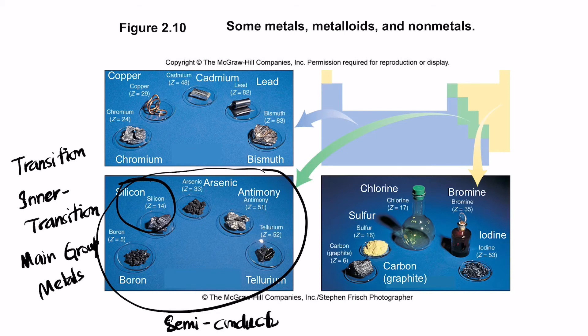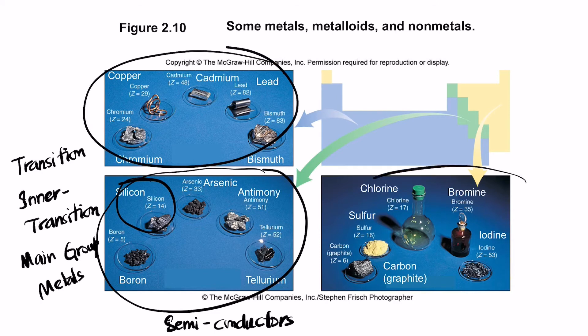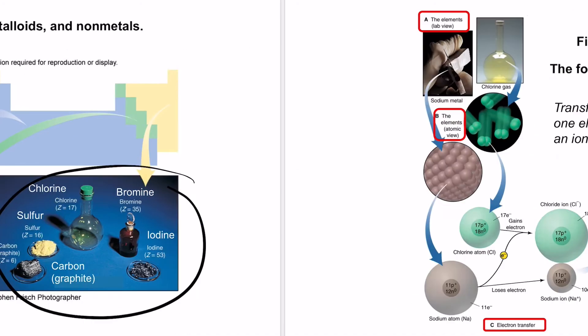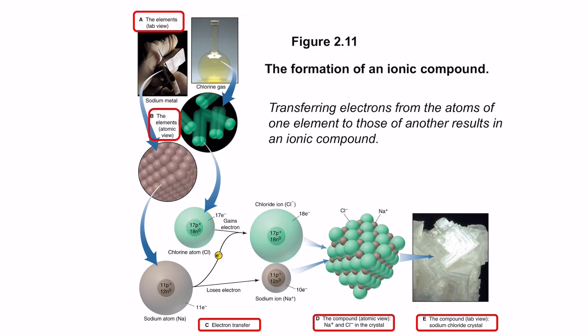One peculiar characteristic of metalloids is that they are not as good conductors as metals, but they are not insulators like non-metals either — they are somewhere in between. That is why they are most commonly used as semiconductors. This is the idea behind metals, metalloids, and non-metals.